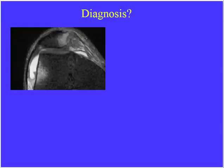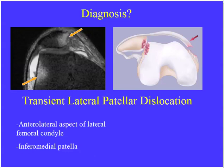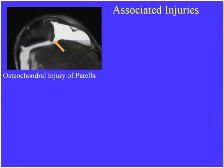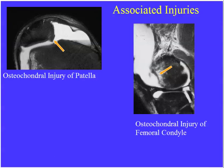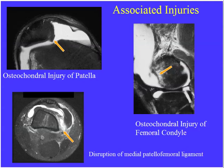If you see a bone contusion pattern with edema at the inferior medial pole of the patella and the lateral femoral condyle, make the diagnosis of transient lateral patellar dislocation. The inferior medial patella impacts against the lateral femoral condyle during lateral dislocation, creating this classic bone marrow edema pattern. Surgical indications associated with this include an osteochondral injury of the patella or femoral condyle with a loose body, or disruption of the medial patellofemoral ligament — which arises along the superior pole of the patella, blends with the deep fibers of the vastus medialis obliquus, and inserts into the adductor tubercle.